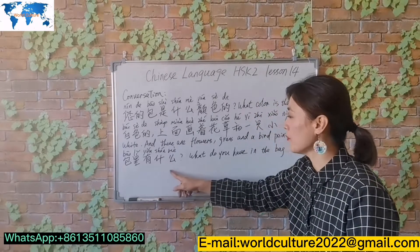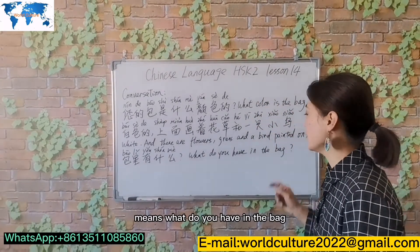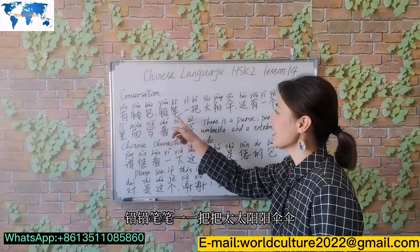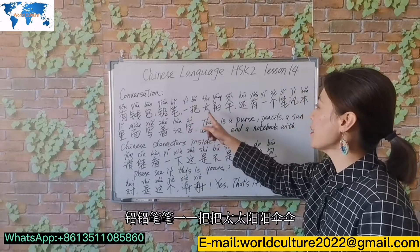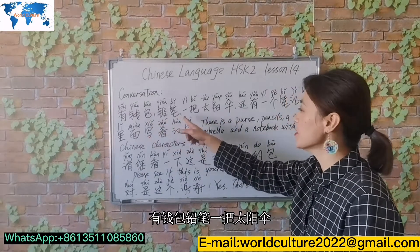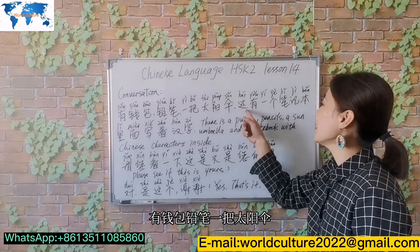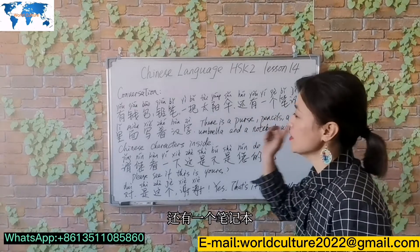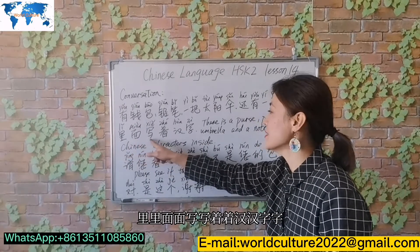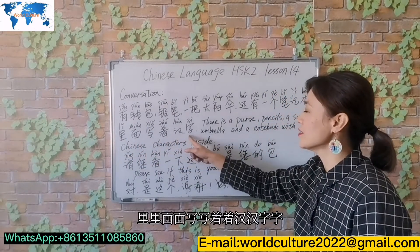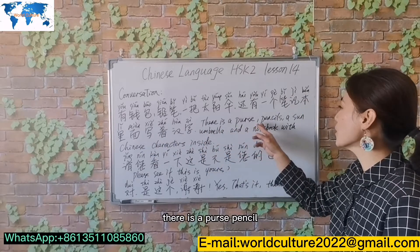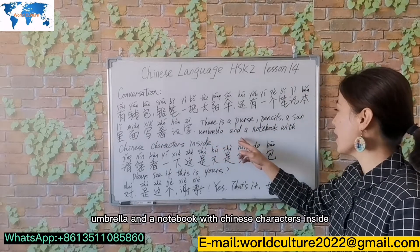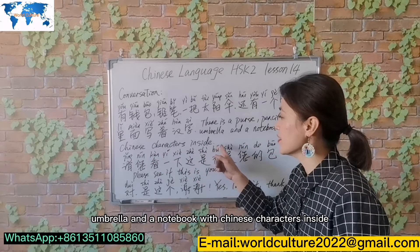包里有什么 means 'What do you have in the bag?' 有钱包，笔，一把太阳伞，和笔记本. There is a purse, pencil, a sun umbrella, and a notebook with Chinese characters inside.